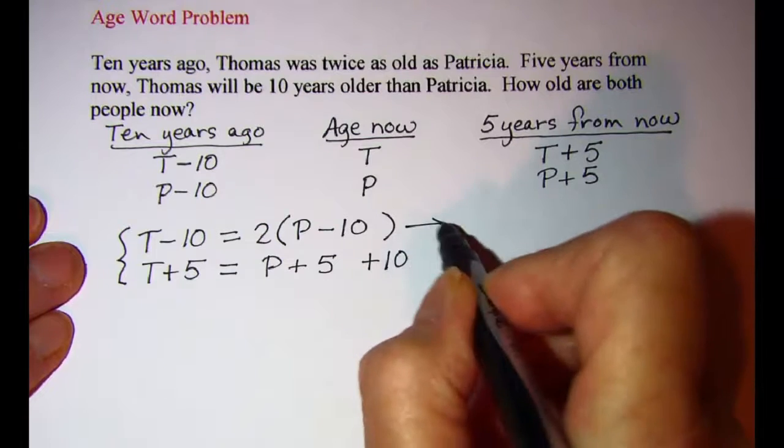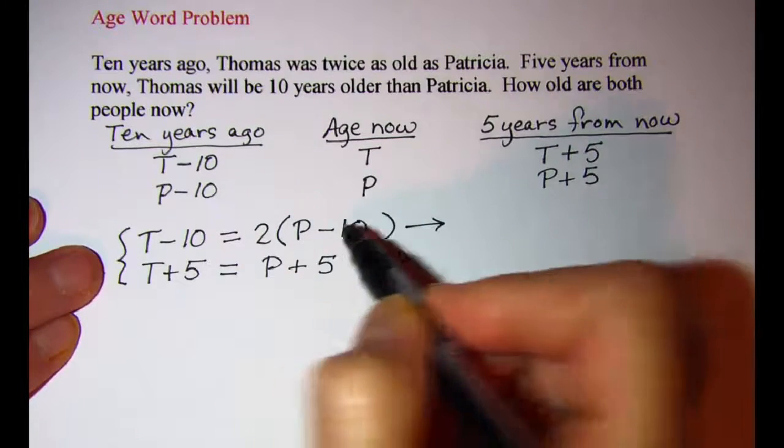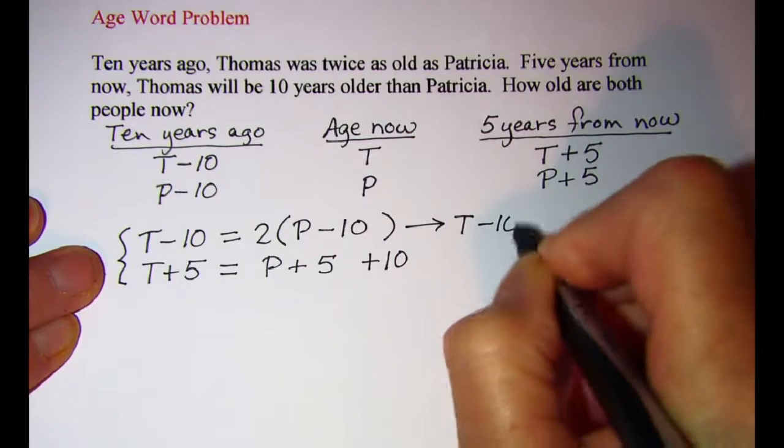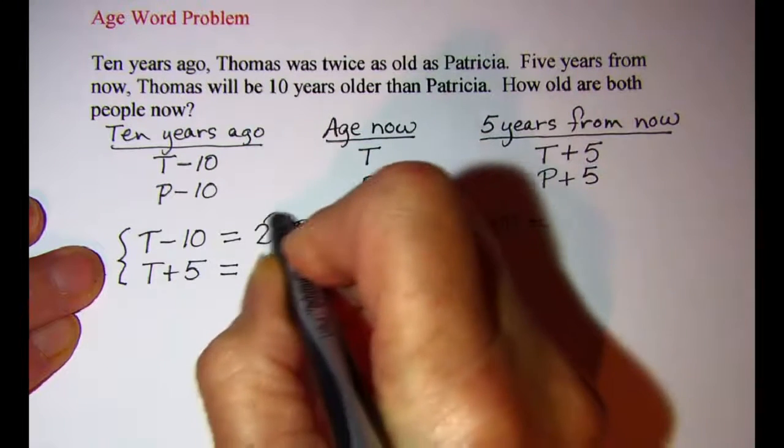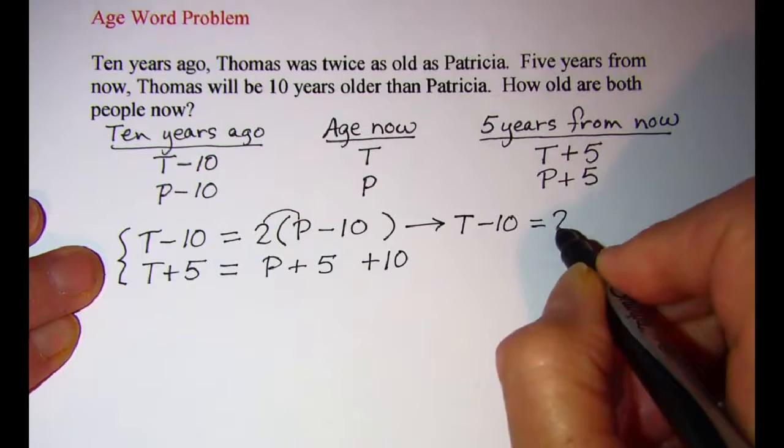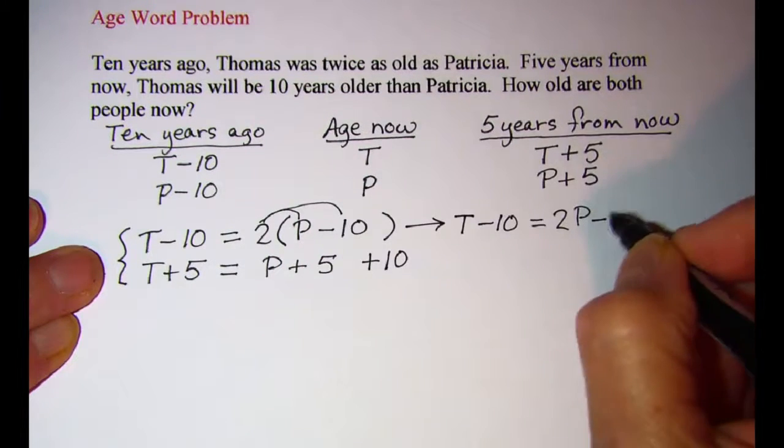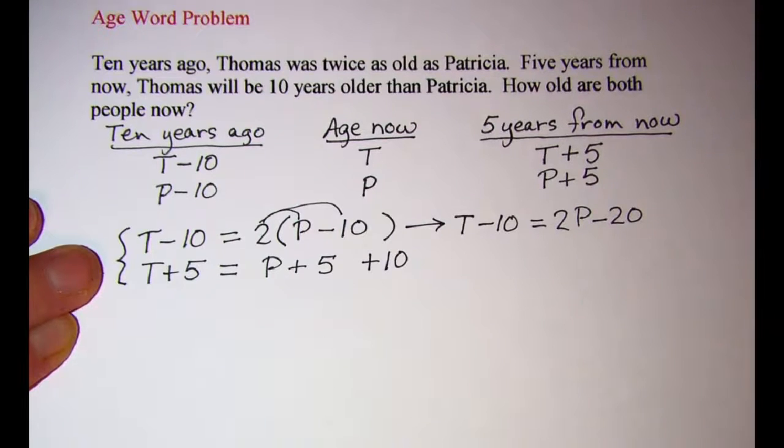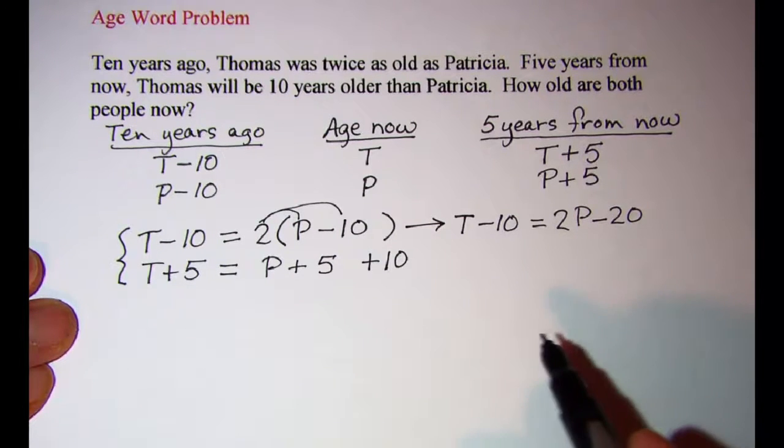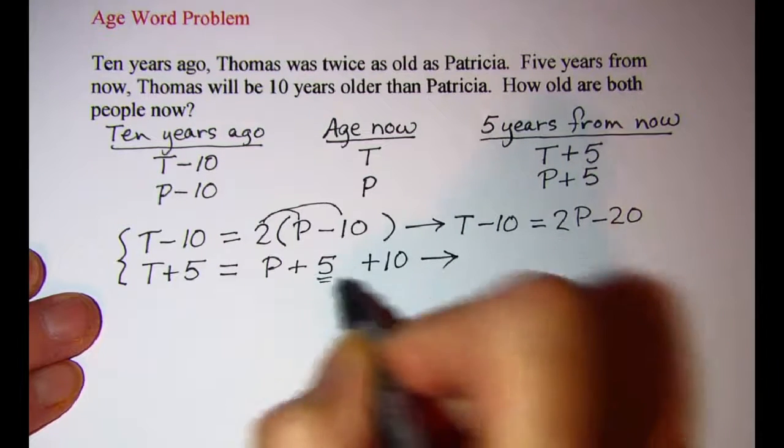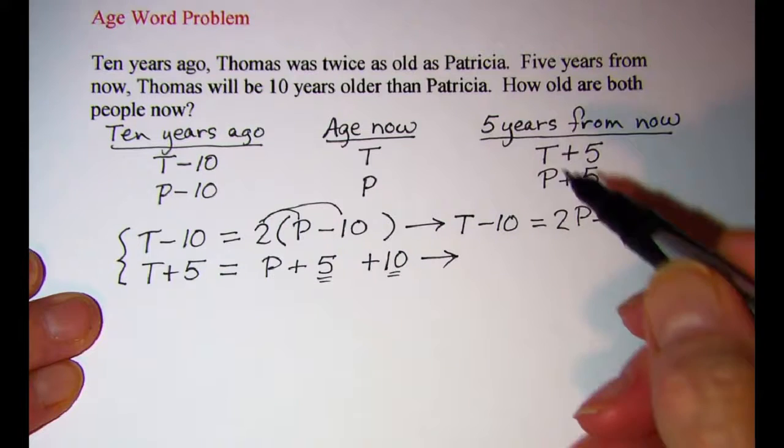On this one, I'm going to distribute my two first, so I have T minus 10 equals 2P minus 20, and then on this one, I'm going to combine my constants over here.